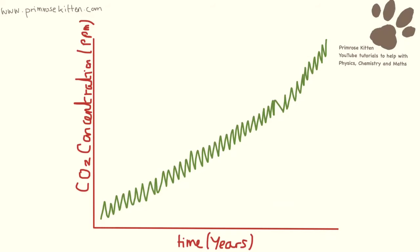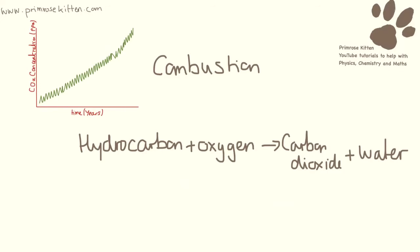As carbon dioxide levels have been increasing, so has the global temperature. The reason all this carbon dioxide comes from burning fossil fuels is that, when we go back to the carbon cycle, this carbon has been locked up inside oil, inside coal, for millions of years. We take it, we burn it in a combustion reaction, and carbon dioxide and water are released. The carbon dioxide goes off into the atmosphere and the levels in the atmosphere increase.